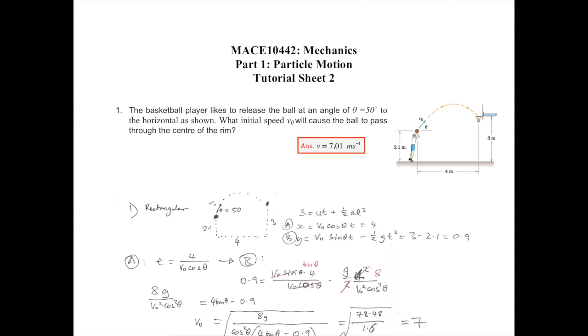Tutorial Sheet 2, Question 1. The basketball player likes to release the ball at an angle of 50 degrees with an initial velocity v0. What initial speed will cause the ball to pass through the hoop?